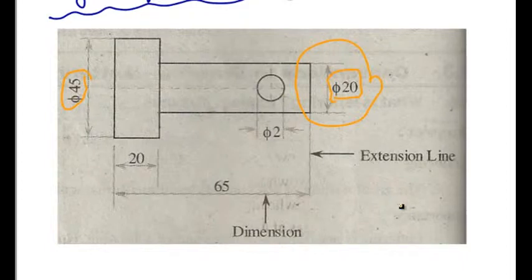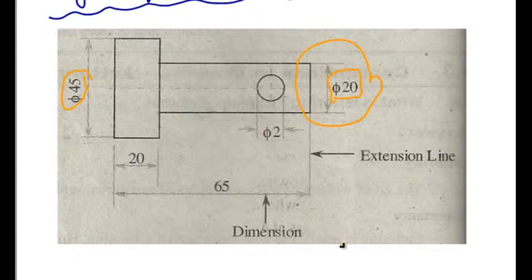Dimensioning is to be done so completely that further assumptions of any dimensions or calculation is not necessary. None of the dimensions must be given more than once. Dimensions should be given outside the drawing unless it is necessary. Dimension line should not cross any other line or hidden lines.